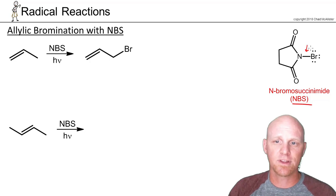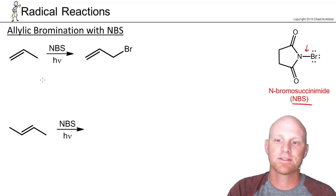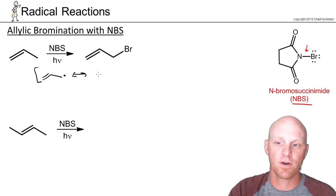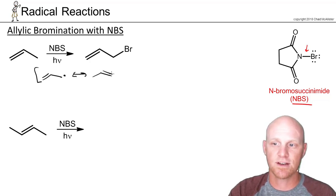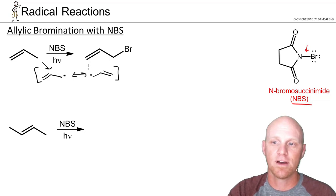We'll go over the mechanism a little bit later, but the hydrogen we're going to abstract is going to be from the allylic carbon, because we can form a resonance-stabilized radical — a more stable radical than many we've seen. So in forming that resonance-stabilized radical, that's where the bromine is ultimately going to end up, which explains why that's our product.